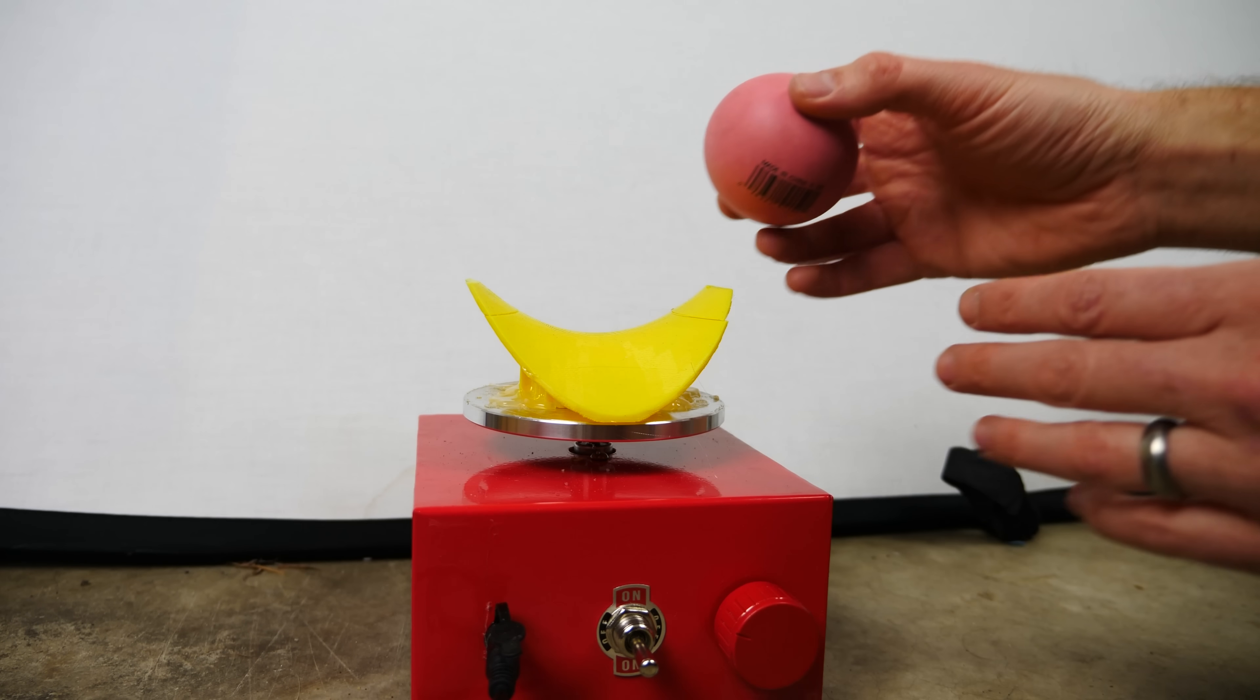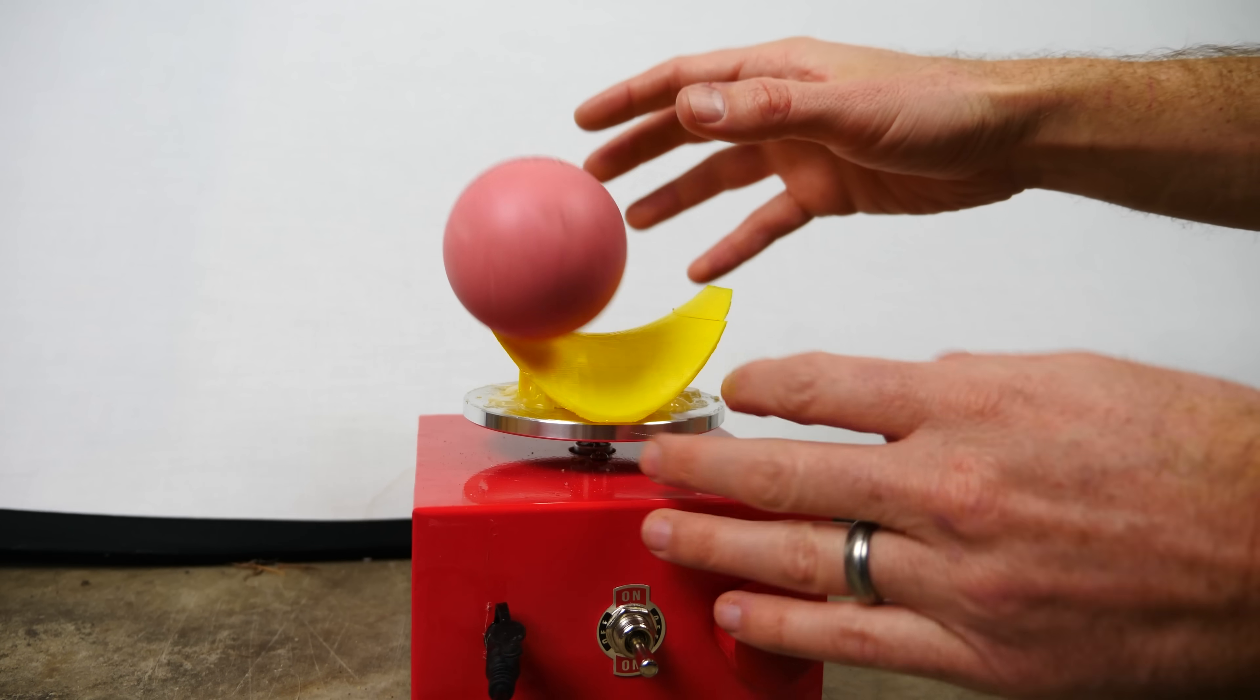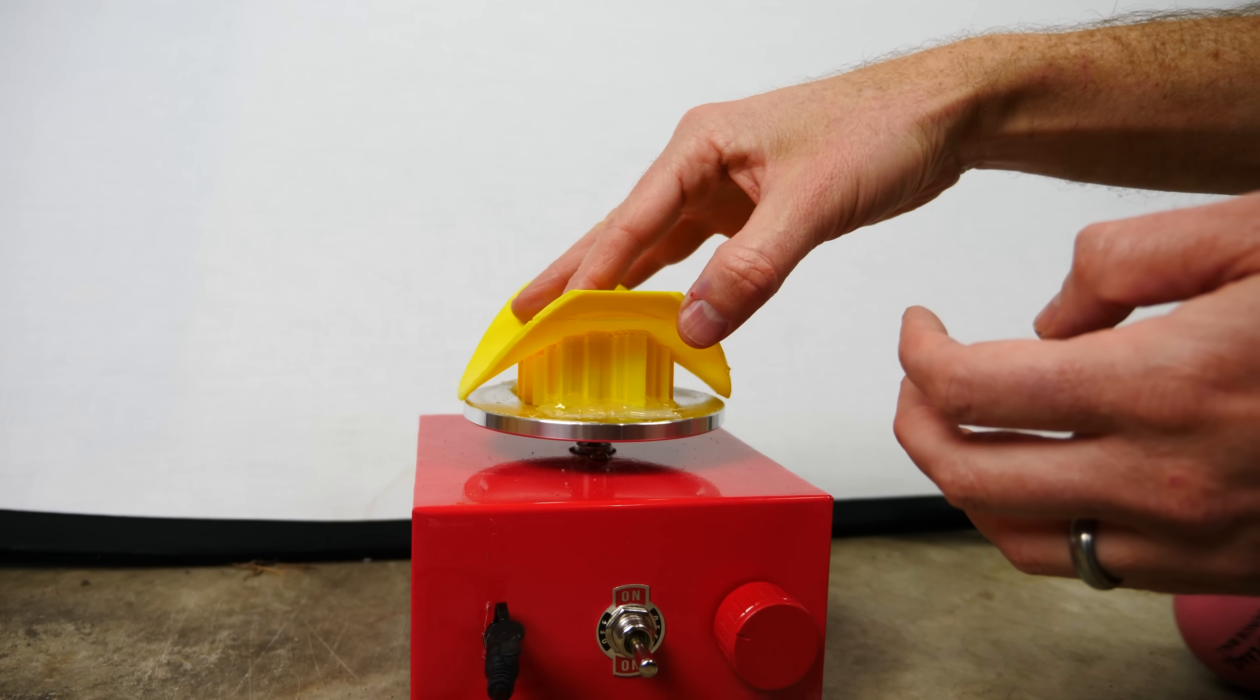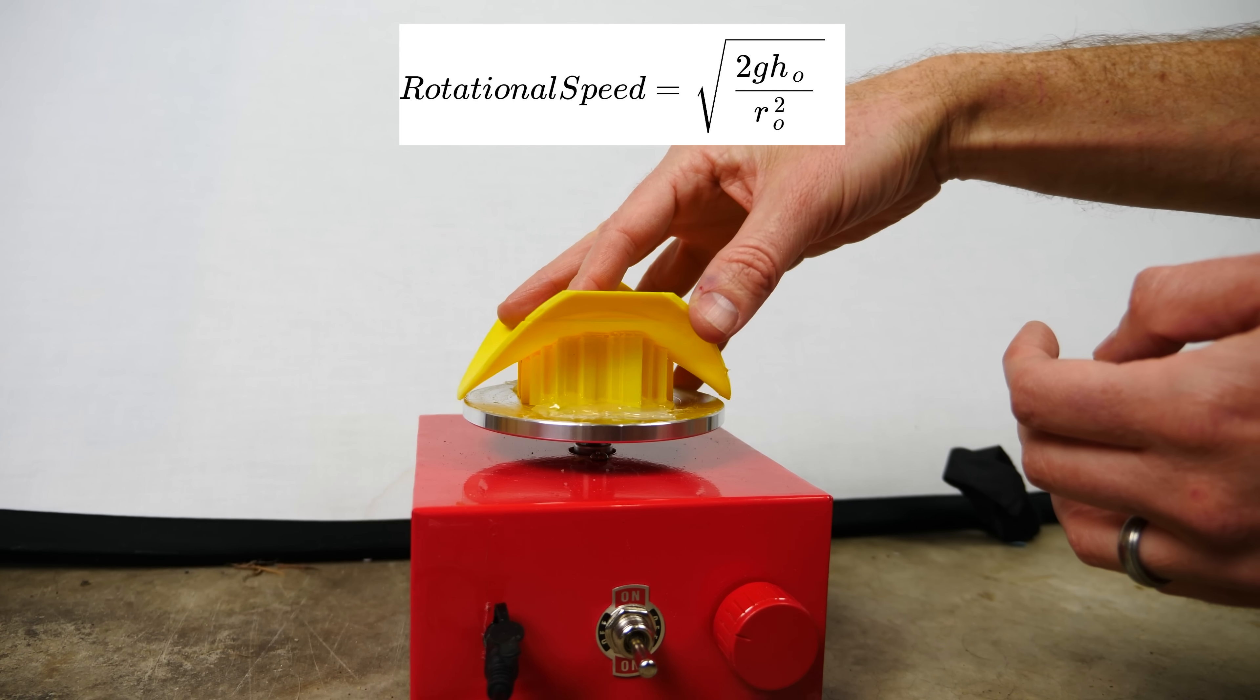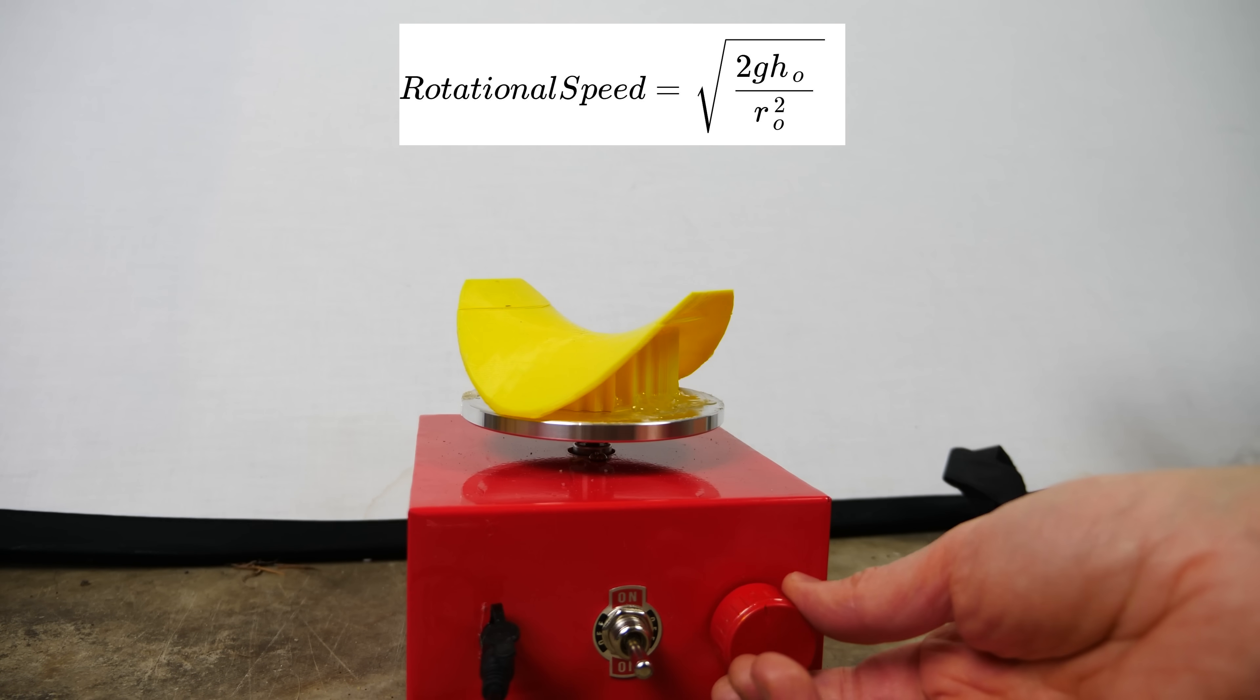Now theoretically if this were a frictionless surface then there would be a certain threshold that you can spin the saddle and above that the particle will be trapped. You can calculate this using this equation where H0 is the height of the saddle above the center of the saddle and R0 is the radius of curvature of the saddle.